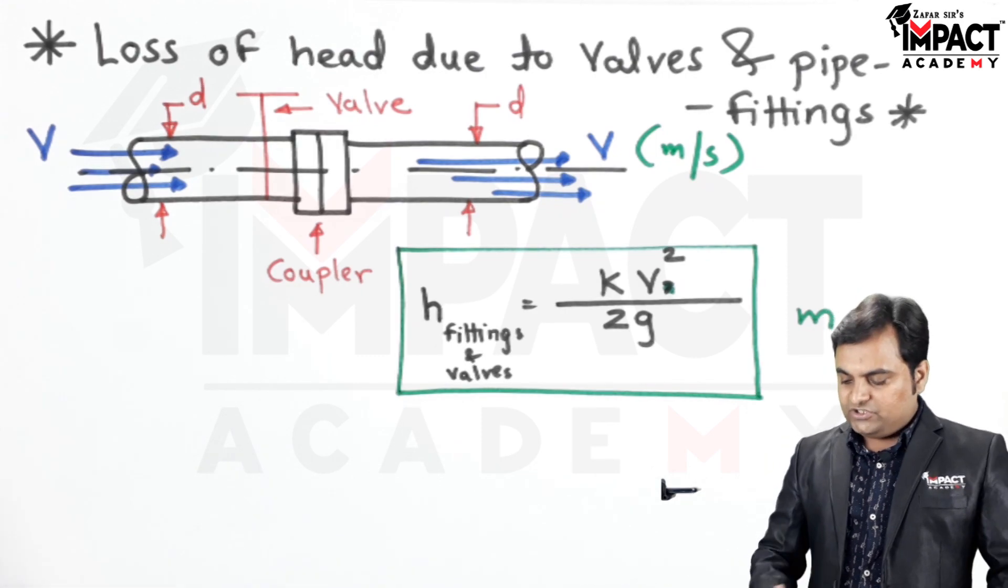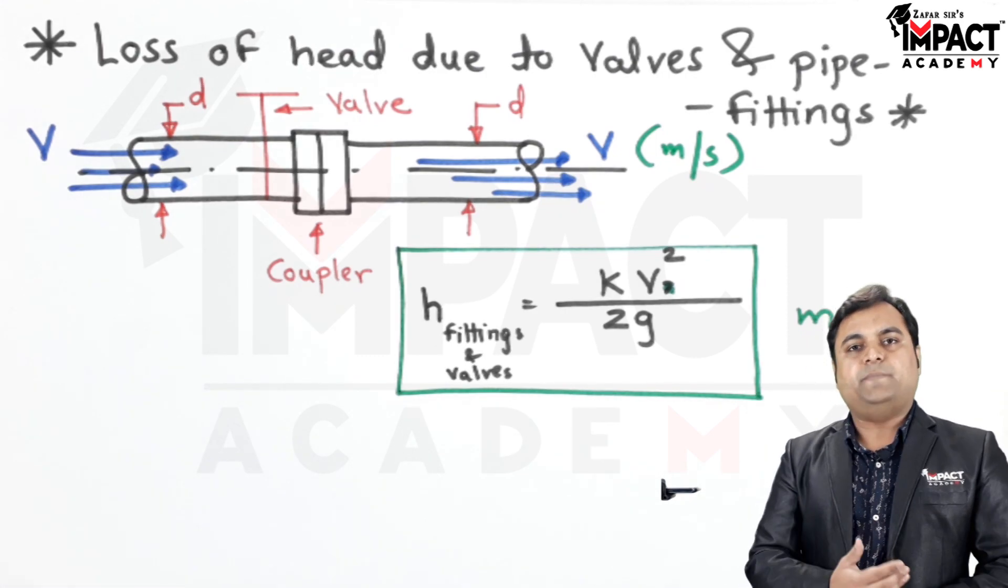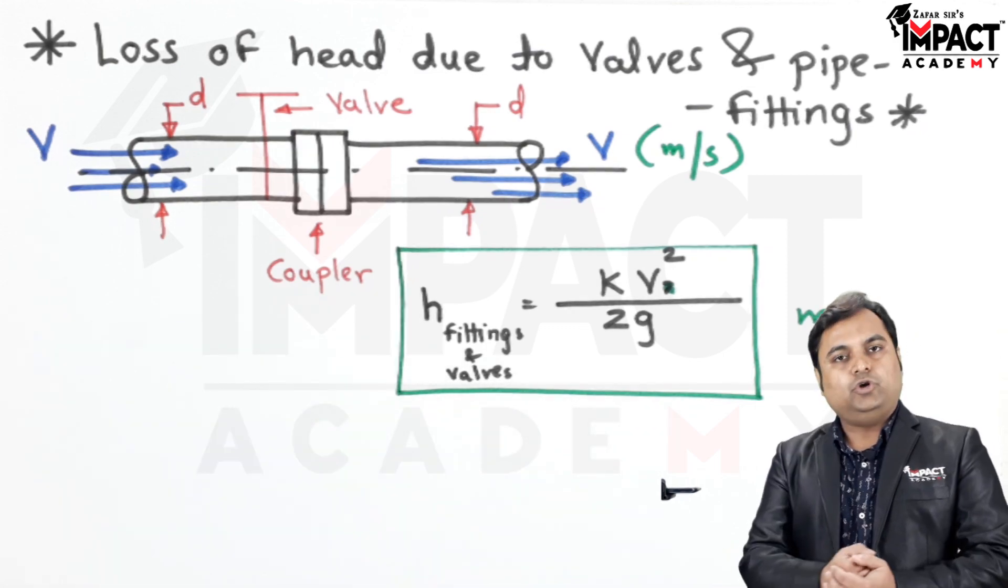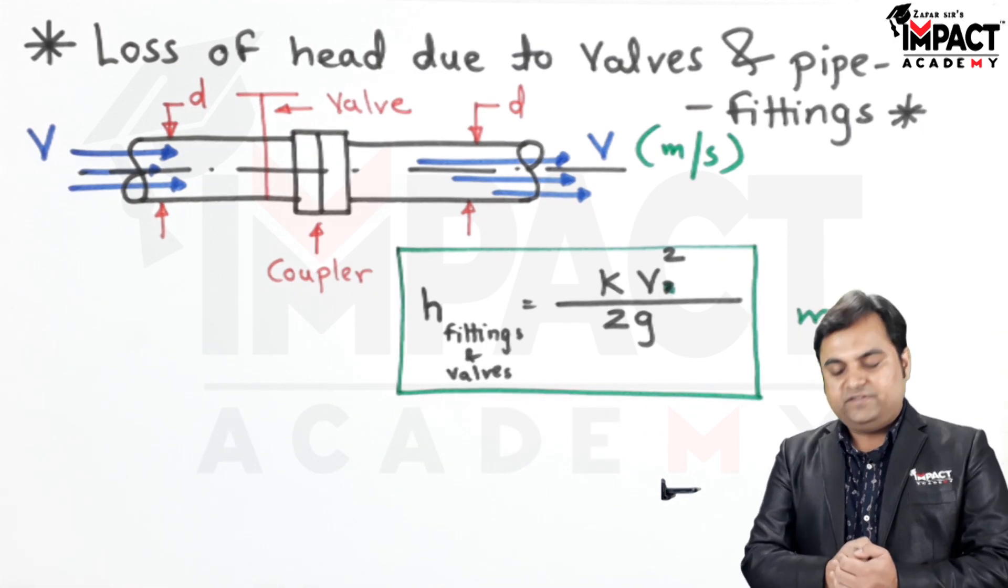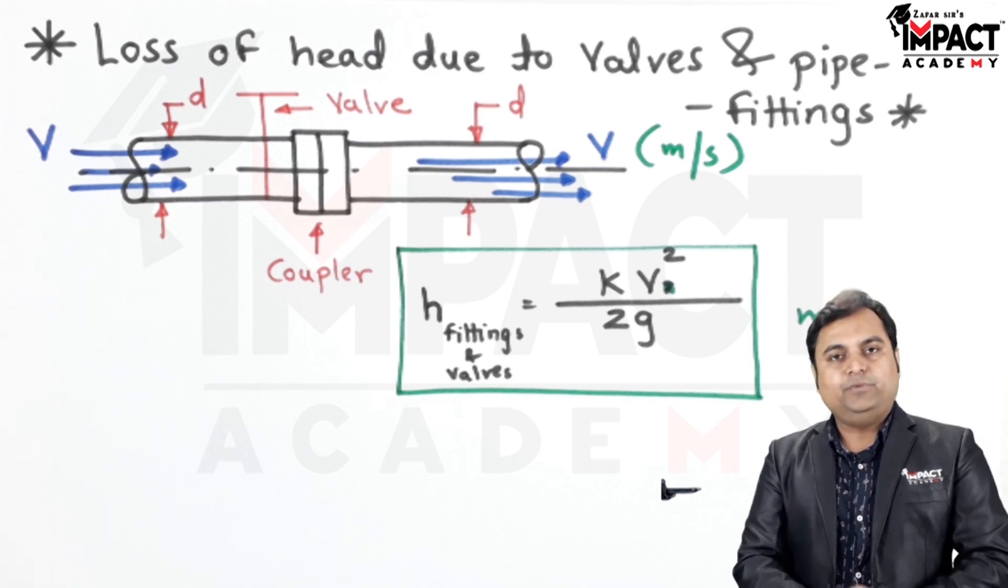Other fittings which are used in the pipeline—there will be this minor loss, also called as the loss of head due to some fittings or valves which are inside the pipeline, and this needs to be considered.